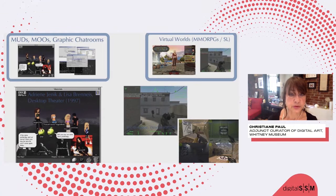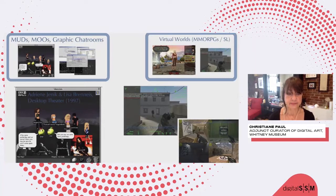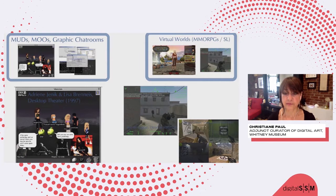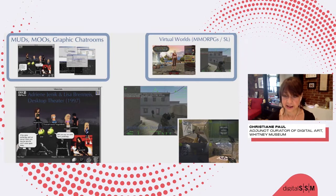Another area that profoundly changed were the MUDs, MOOs, and graphic chat rooms of the 90s, which artists from the very start used for performative interventions. One example would be Desktop Theater, which Adrianne Jenik and Lisa Brenneis did on the Palace graphic chat rooms — they would go in and perform, for example, Waiting for Godot, intervening in those platforms. Then you see continuations in online games: Joseph DeLappe's Dead in Iraq, where he read the names of fallen soldiers in the Iraq War in a performative memorial, and Velvet Strike, which allowed you to spray peace graffiti onto the walls of the game Counter-Strike. The artists received a lot of pushback for that.